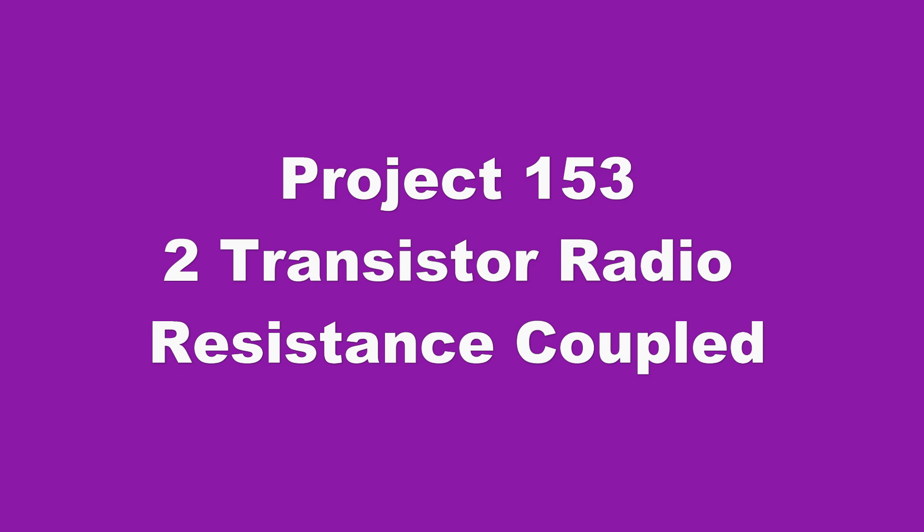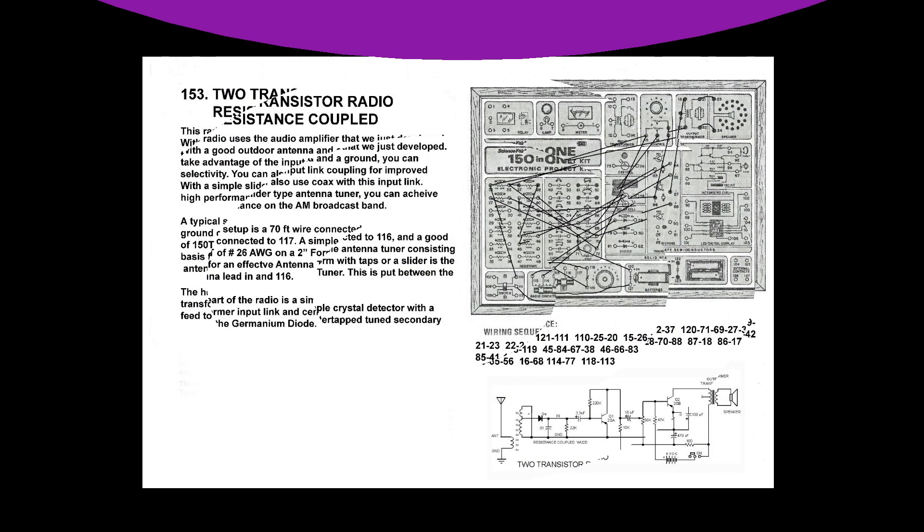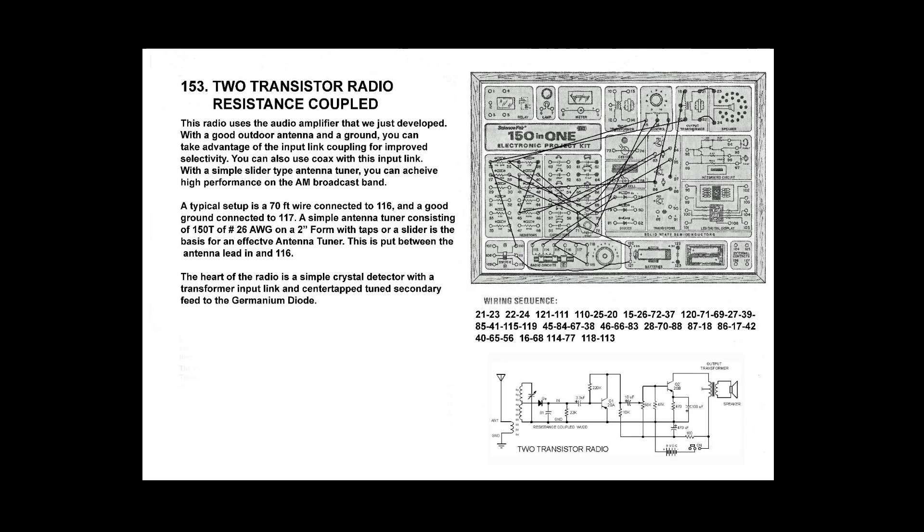So I'm using the input coupling coil feature on the ferrite loop stick to full advantage. It's a coax-fed longwire antenna. And this is a serious antenna for a crystal set attached to a two-transistor amplifier. And we should get good results.